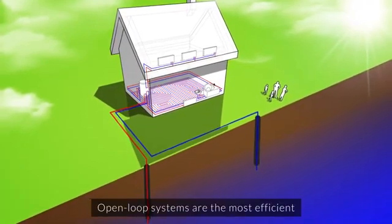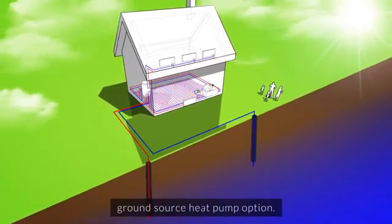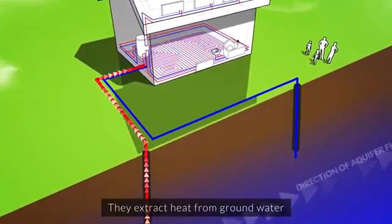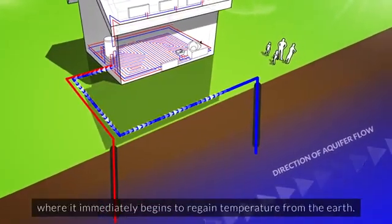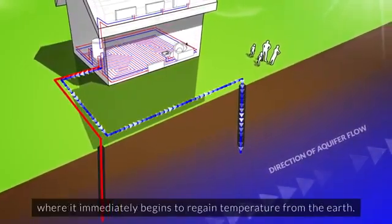Open loop systems are the most efficient ground source heat pump option. They extract heat from the groundwater before returning the same water to the ground, where it immediately begins to regain temperature from the earth.